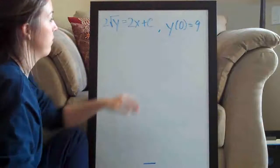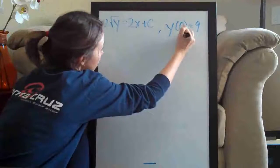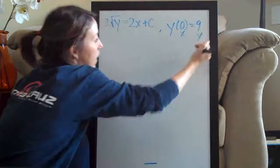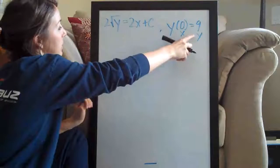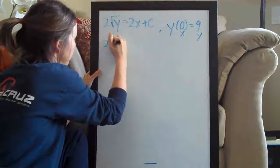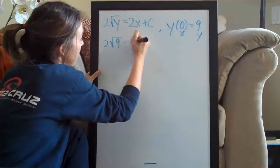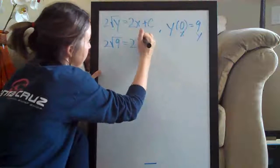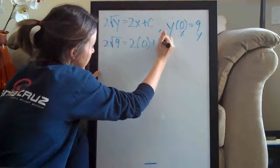We can plug in our values—this is x and this representing y. So we plug in nine for y. We have 2 times the square root of nine equals 2 times zero plus C.